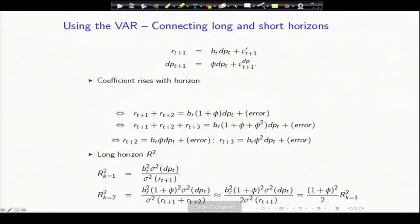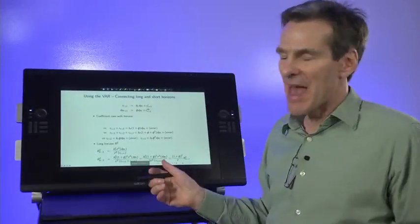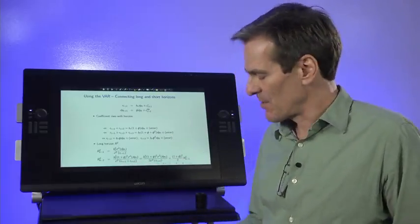The coefficients are rising with horizon because the forecasting variable is very persistent. When phi is a big number, the coefficients rise with horizon. Similarly, the R-squared. We saw that beautiful R-squared rising with horizon. The R-squared at a one-period horizon is the variance of the right-hand variable divided by the variance of the left-hand variable. The R-squared at two-period horizon, that now is the right-hand variable. So the variance of the right-hand variable is b-squared times 1 plus phi-squared variance of dividend yields. The variance of the left-hand variable is approximately twice the variance of the returns. You can see the R-squared is going up. 1 plus phi squared, if phi were 1, that would be twice the R squared of the one-period horizon.